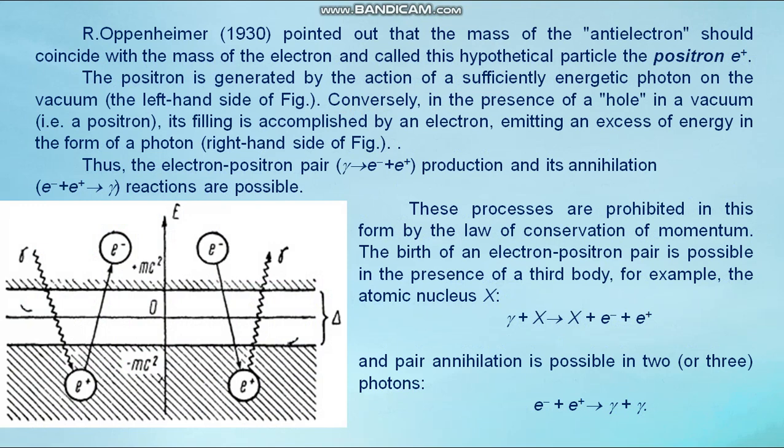Oppenheimer, 1930, pointed out that the mass of the anti-electron should coincide with the mass of electron and called the particle the positron, e⁺. The positron is generated by the action of a sufficiently energetic photon on the vacuum, the left-hand side of the figure. Conversely, in the presence of a hole in the vacuum, it is a positron. Its filling is accompanied by the electron emitting an excess of energy in the form of a photon, right-hand side of the figure.